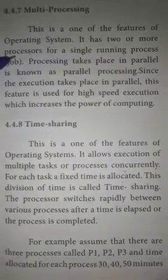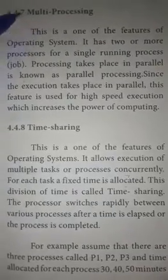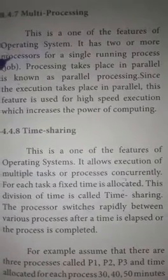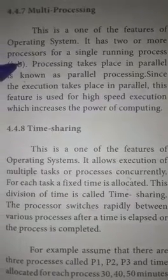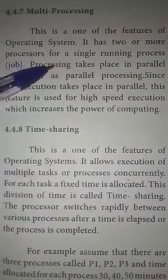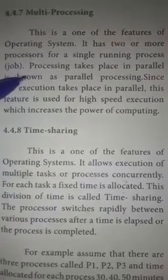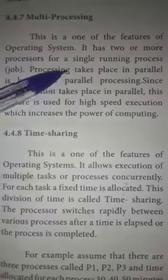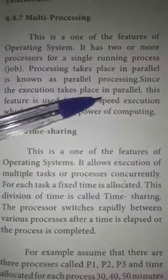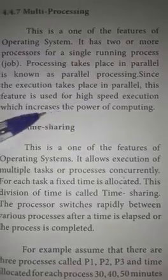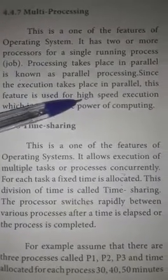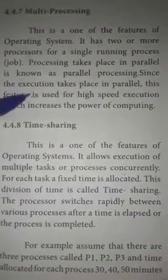Multi-processing means it has two or more processors for a single running process. Processing takes place in parallel, which is known as parallel processing. Since execution takes place in parallel, this feature is used for high-speed execution, which increases the power of computing.